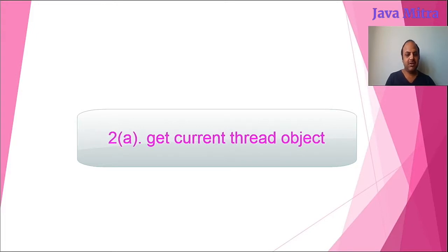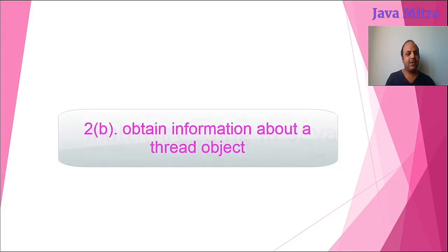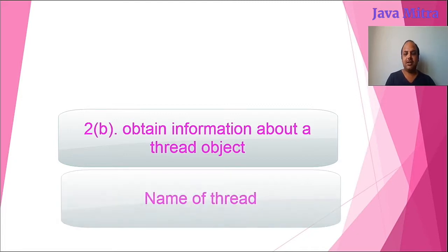You can obtain information about a thread object like thread's name with the help of getName, thread's priority with the help of getPriority method, whether the thread is interrupted, is it alive, or is it a daemon thread.